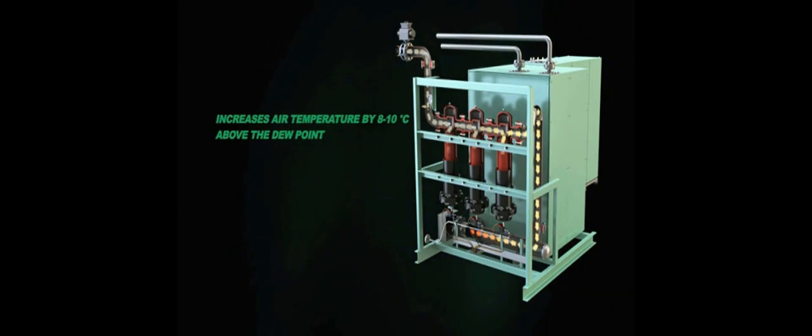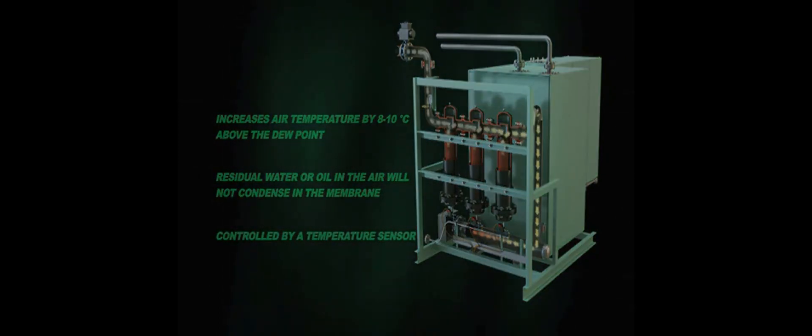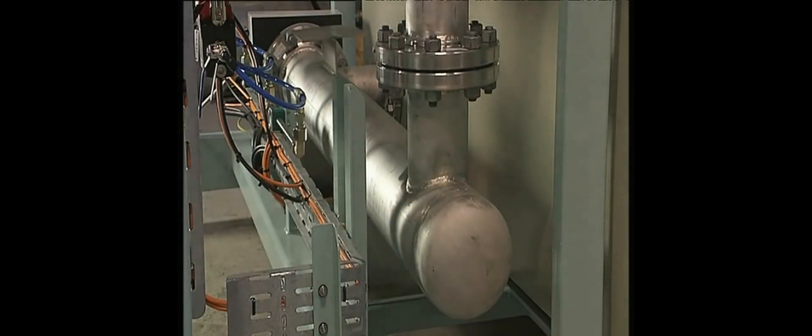The filtered air then passes through an electric heater, which will increase the air temperature by 8 to 10 degrees Celsius. This temperature is above the dew point and ensures that any residual water or oil in the air will not condense in the membrane. The heater is controlled by a temperature sensor. If the air temperature is out of the specified tolerance, the system will be shut down.